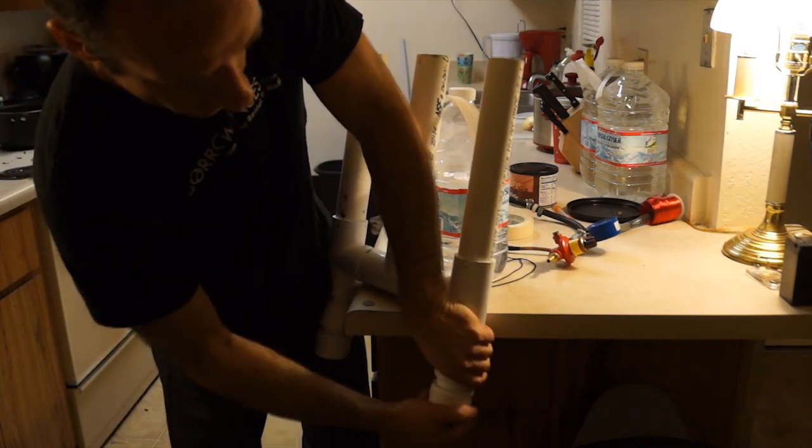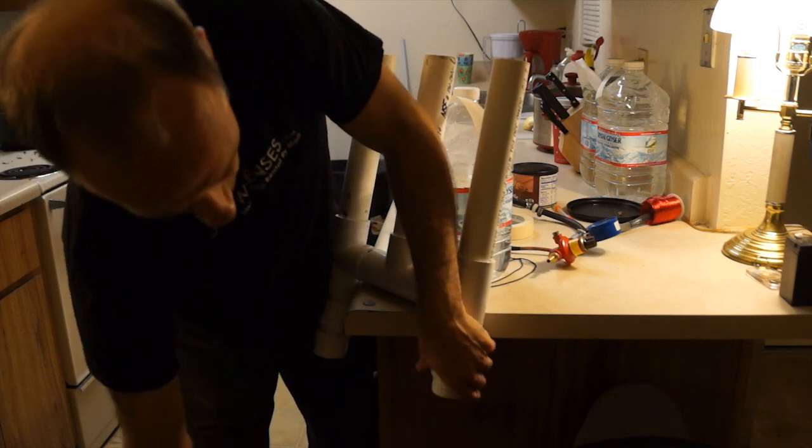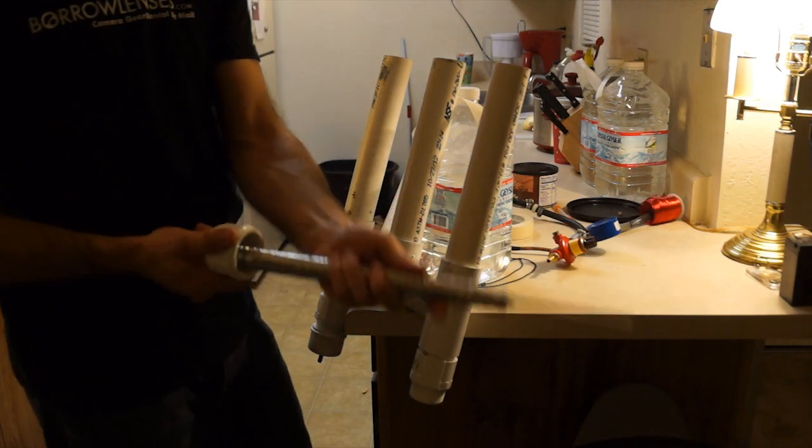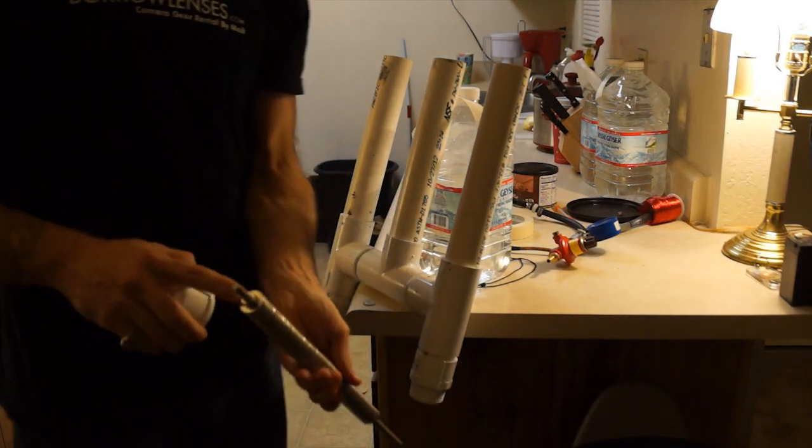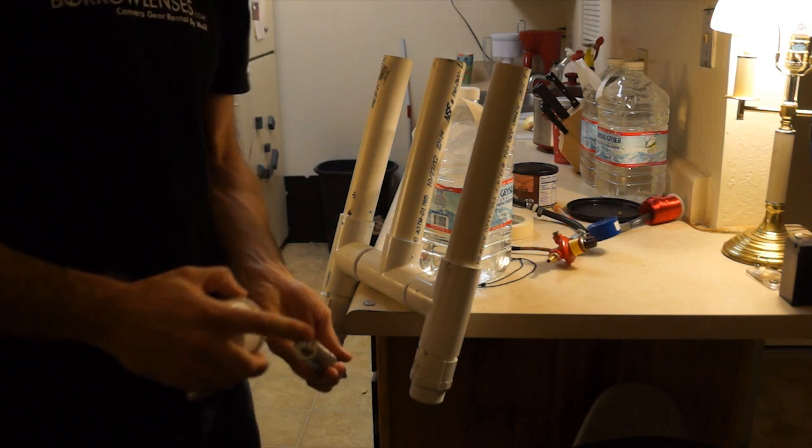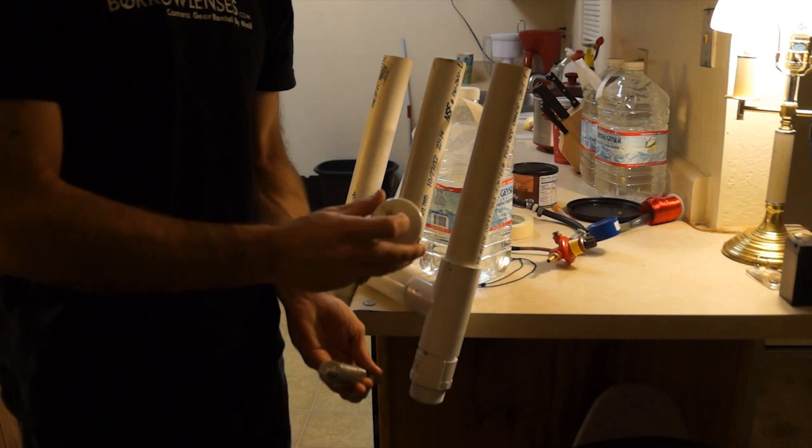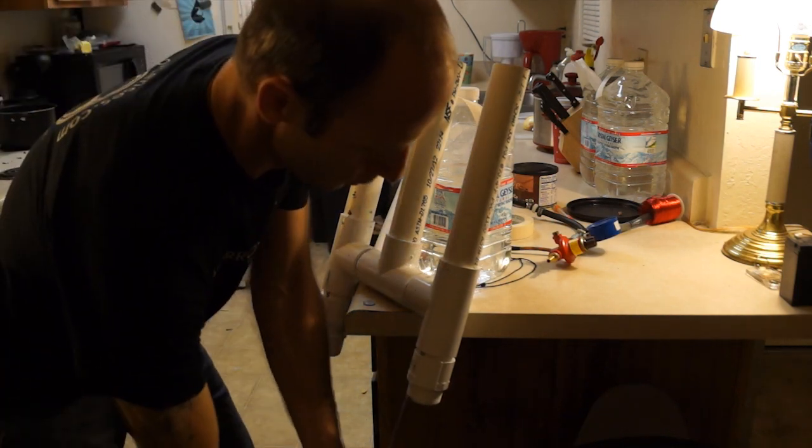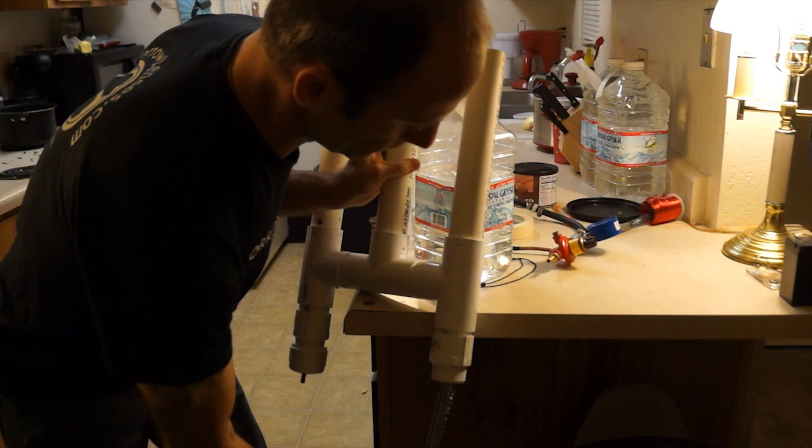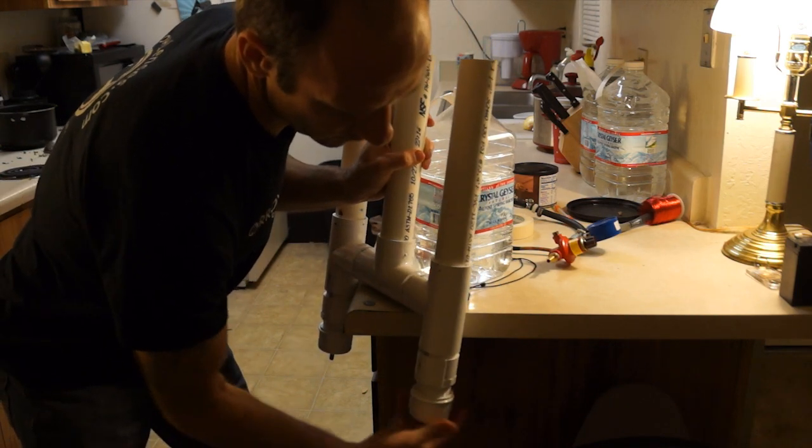And in the bottom here, these caps screw off, and they have an all-thread stainless rod driven through. I'm going to put another washer on the bottom of this and another nut with some rubber to seal the hole so that it's water-tight. And these are going to be removable so that if they get some scale on them or anything like that, they can take them apart and service them.